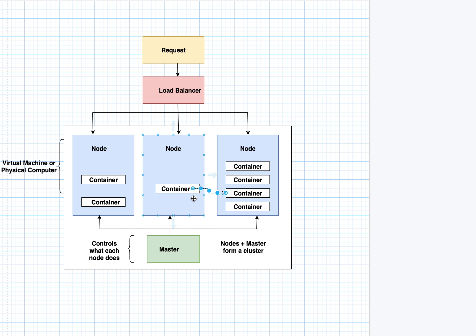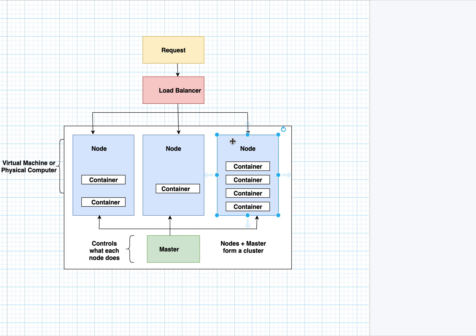In this example, two containers are running on node 1, one container on node 2, and four containers on node 3. Kubernetes keeps spawning and creating containers on different nodes depending on requirement. The requests from your application come down to the load balancer, which distributes them across the multiple nodes, and the master controls the overall state of the cluster. The Kubernetes cluster is comprised of the master plus all the nodes. There is also a scheduler in the Kubernetes architecture responsible for deciding where each container should be deployed.